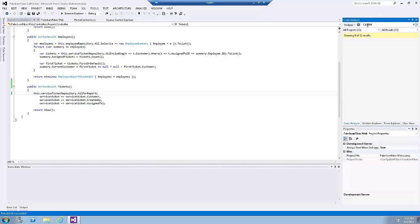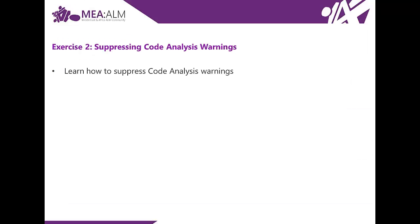And by doing so, we reach the end of Exercise 1. Exercise 2: Suppressing Code Analysis Warnings. In this exercise, you will learn how to suppress code analysis warnings at the project level and the source level.